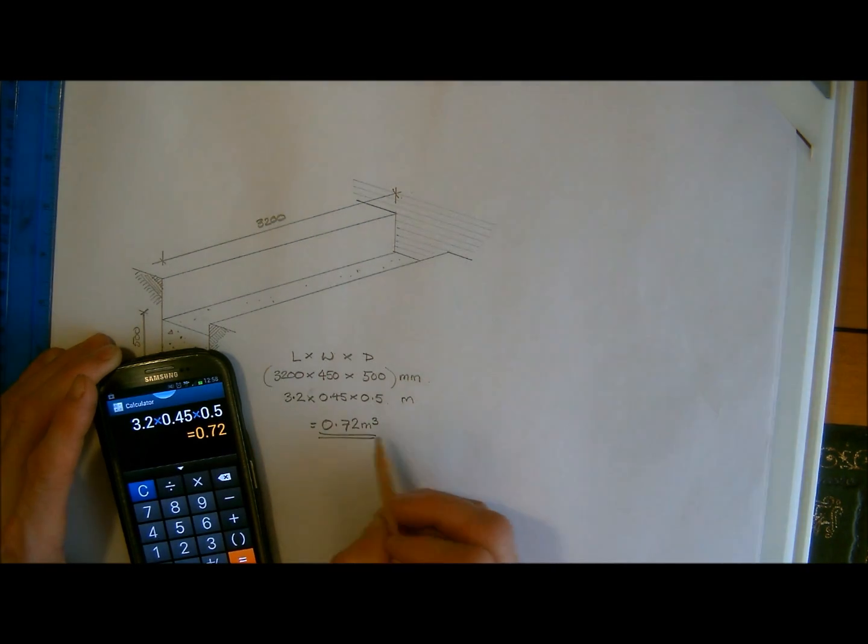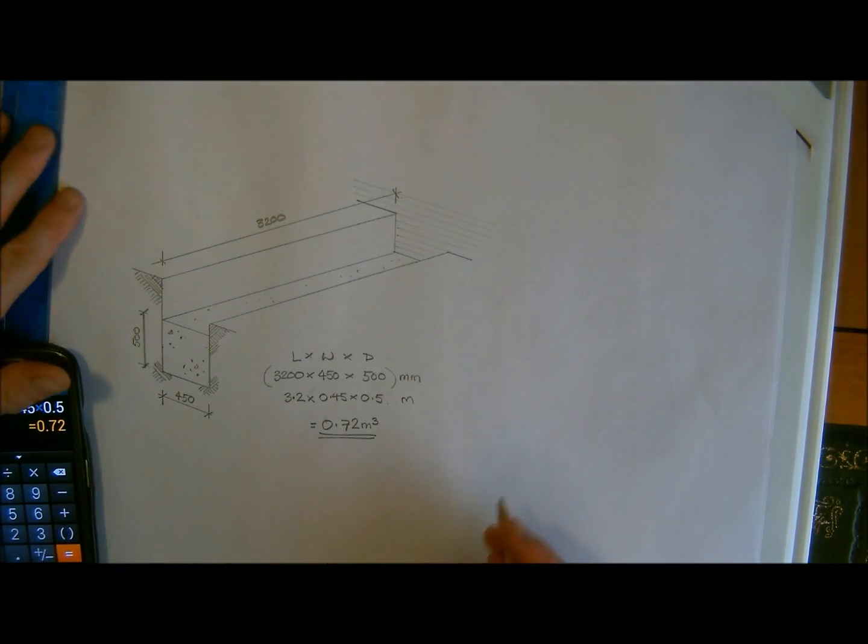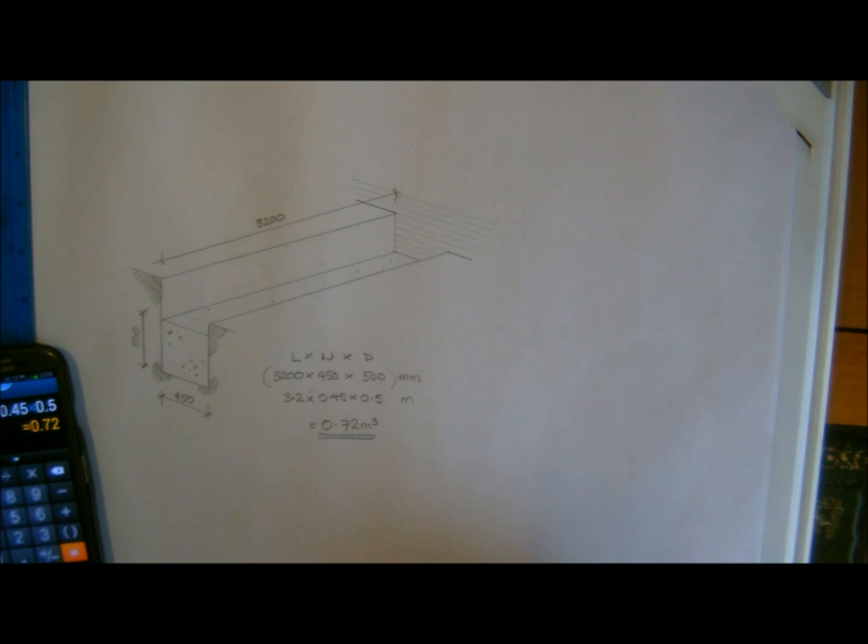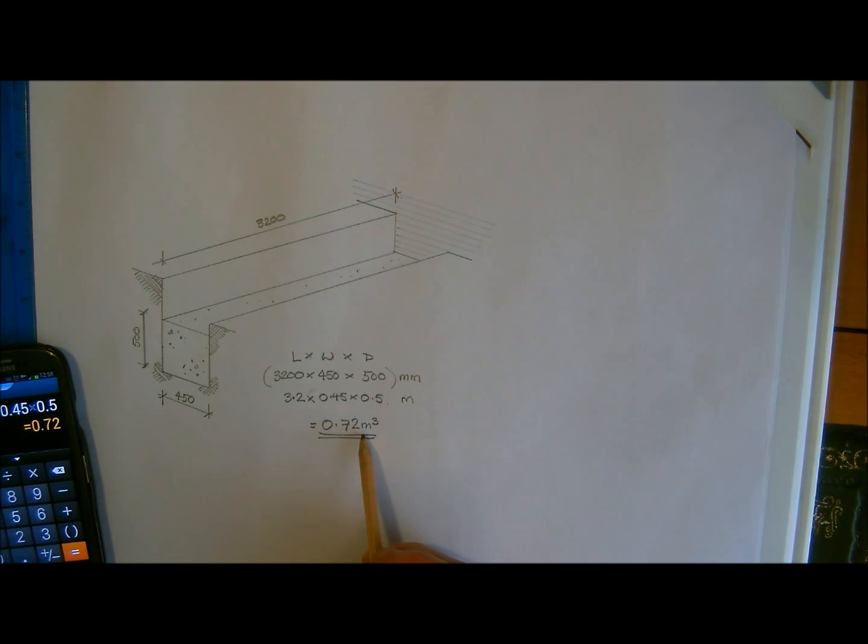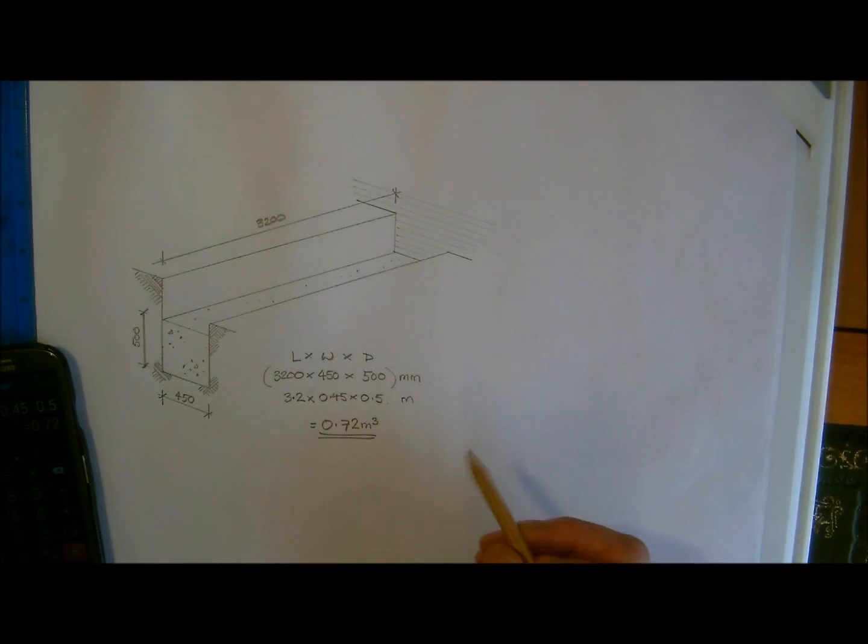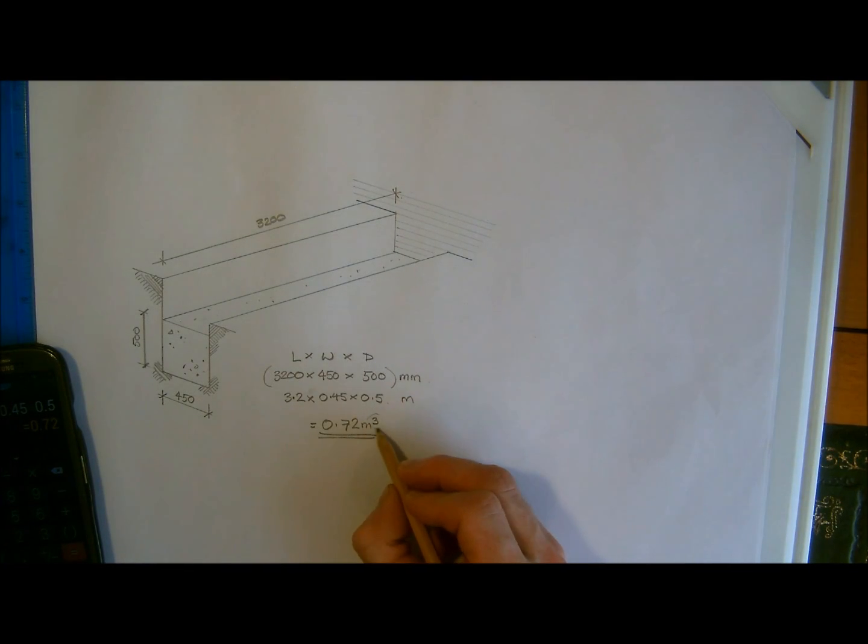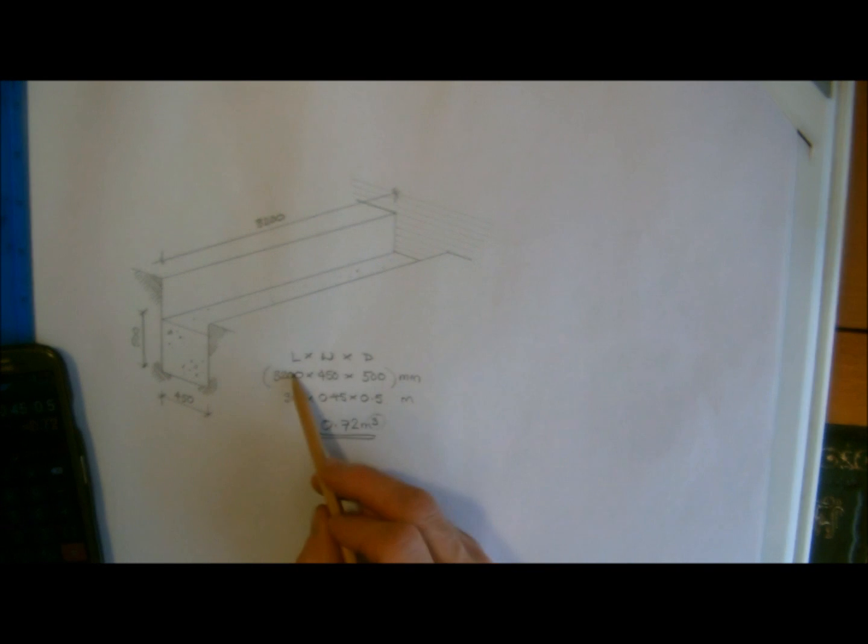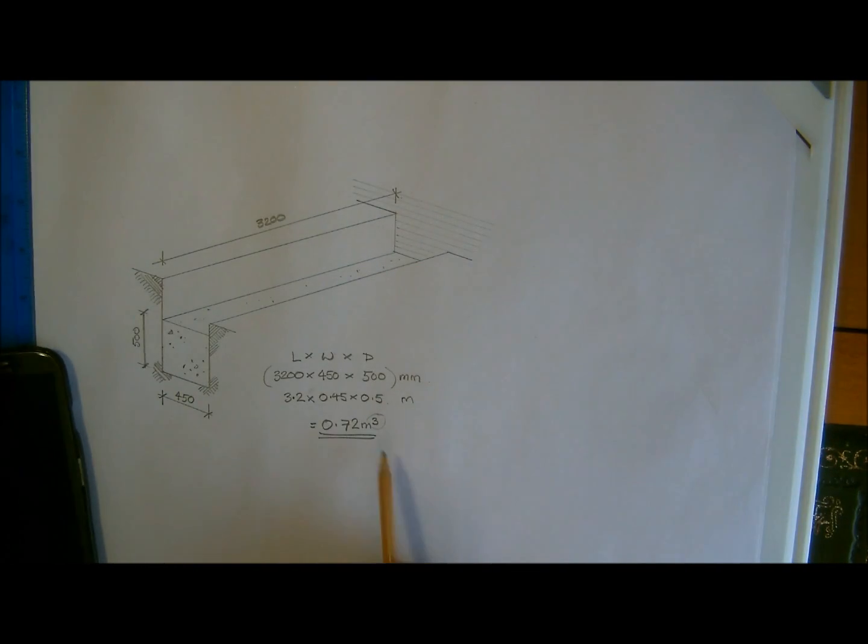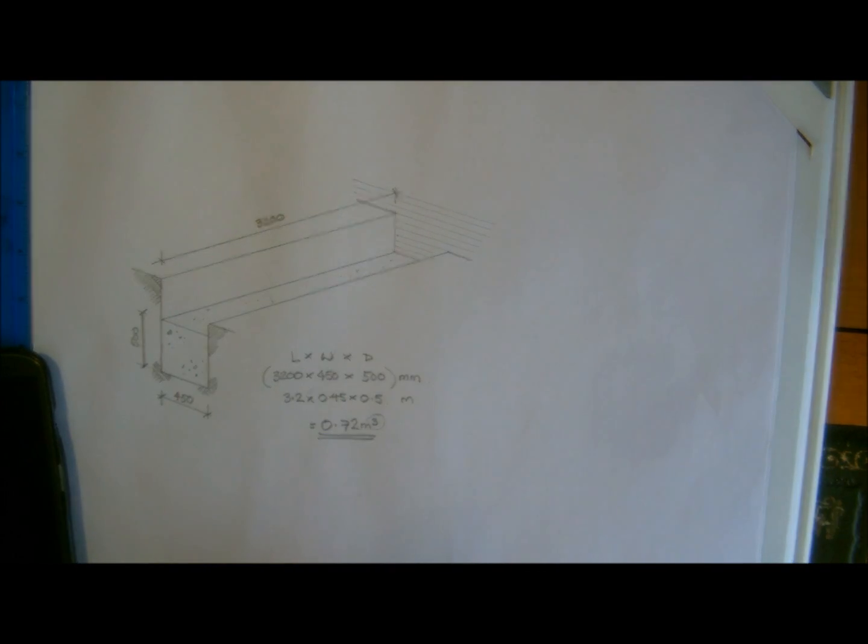So that is a minimix load, well not a load, but a minimix order because you're looking at only three quarters of a meter of concrete or just under. So again, just remember that that is three because we've got the three dimensions required for a cubic calculation.